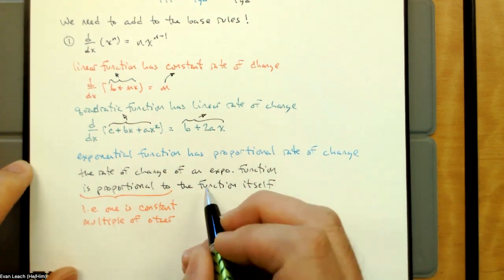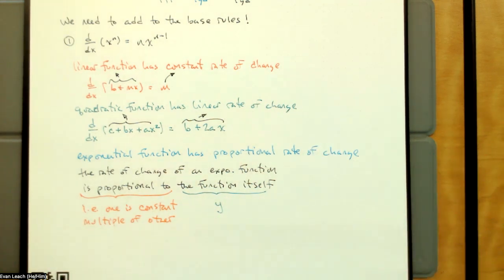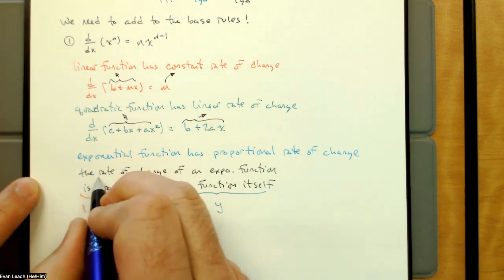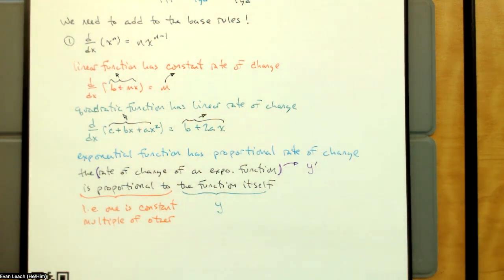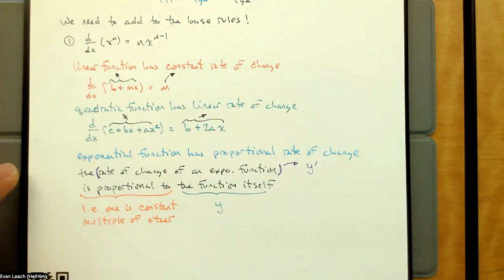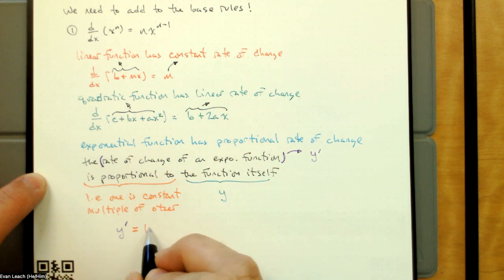So this is what proportional means: one is a constant multiple of the other. A is proportional to B means A equals some constant times B. I'm going to call the function itself Y. If Y is the function itself, then the rate of change of Y — and we know rate of change means derivative — so the rate of change of Y is just Y prime. Y prime is the derivative of Y, the rate of change of Y. Y is the exponential function.